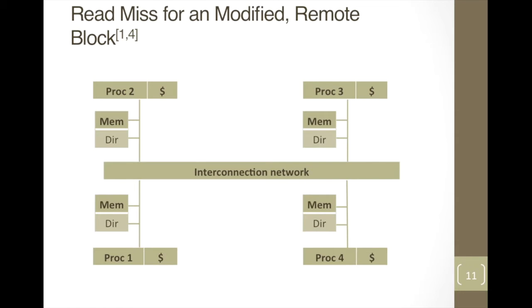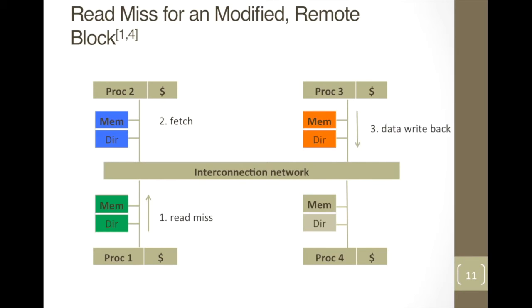Now let's consider a read miss for a modified remote block. Suppose a read request originates from P1 and it is a miss, so a read miss message is sent to home node P2. P2 doesn't have the latest copy as the memory is in the modified state in P3. P2 sends a fetch message to P3, and P3 responds with a data write-back message to P2. P2 then has the latest copy and sends a data value reply message to P1. Here P3 is the remote node.